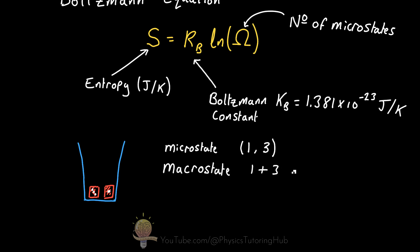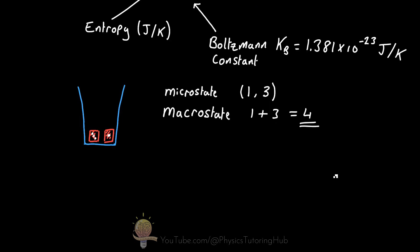A macrostate is defined by the total sum of the numbers on the dice. So for our example microstates of one and three, the macrostate would be four because it's simply the sum of one and three. But you may have noticed there are a total of three microstates that match the macrostate of four. We've got a microstate of one and three, but we could also have a microstate of two and two and also a microstate of three and one. They all add up to four.